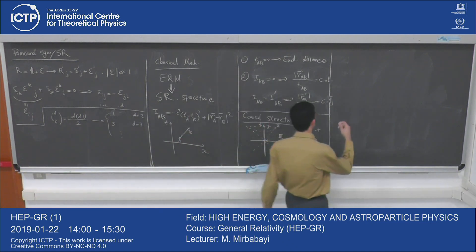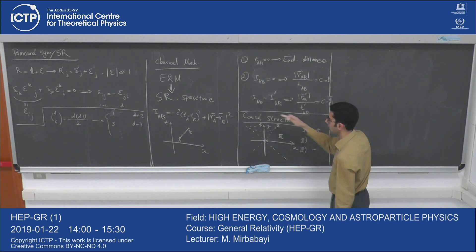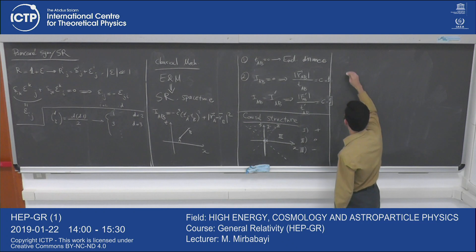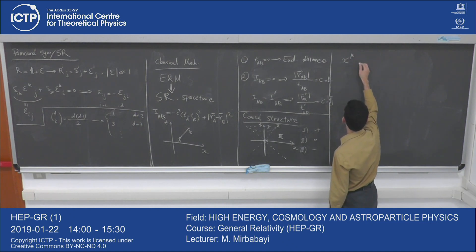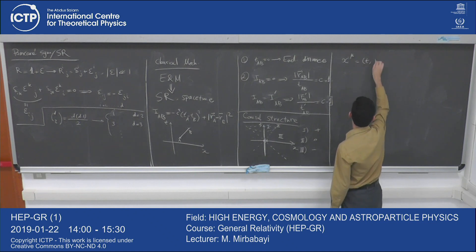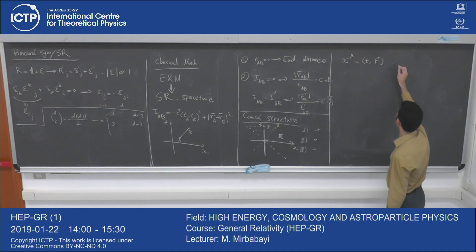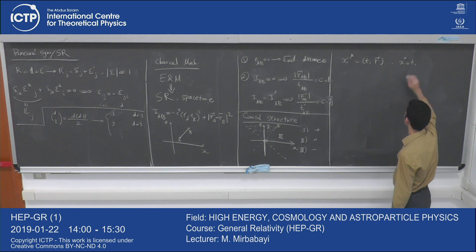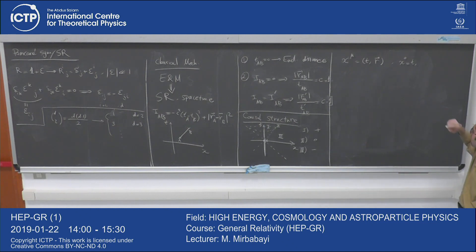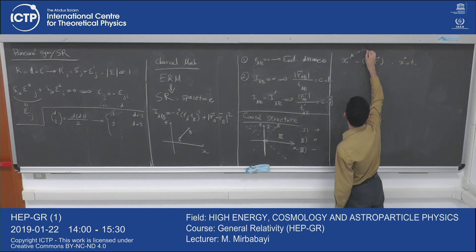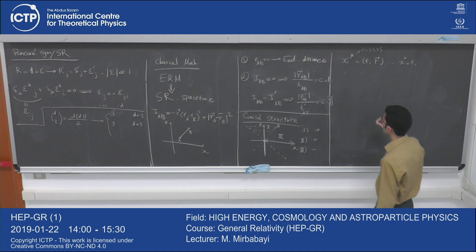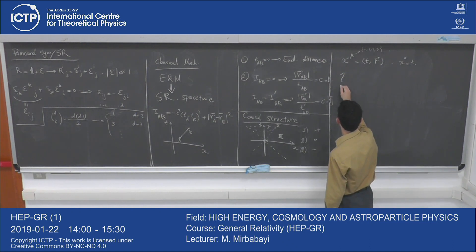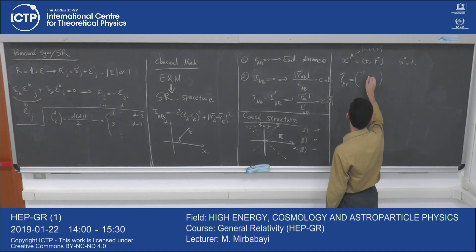What are these symmetries? They are transformations of T and R which preserve this distance invariant. I write X^mu, a collection of T and R, such that X^0 equals T and then X^i is what I used to call R^i. So mu goes from 0 to 3. We can introduce the Minkowski metric, which is diag(-1, 1, 1, 1). In terms of this matrix notation, the Lorentzian interval becomes X_AB^mu eta_{mu nu} X_AB^nu.